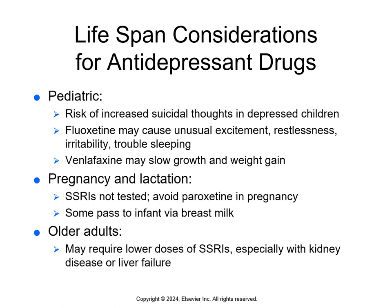In kids, the risk of increased suicidal thoughts is elevated. Fluoxetine can cause unusual excitement, restlessness, irritability, and trouble sleeping. Venlafaxine can slow growth and slow weight gain. SSRIs have a moderate likelihood of increasing the risk of birth defects or fetal harm, but they haven't been tested during pregnancy, so we avoid them. Some pass through breast milk, so we avoid those in breastfeeding as well — unwanted effects in the breastfeeding infant include drowsiness, decreased feeding, and weight loss. Tricyclic antidepressants have a moderate to high likelihood of increasing the risk for birth defects, so we don't use those in pregnancy either. Older adults may require lower doses, especially with kidney disease or liver failure.